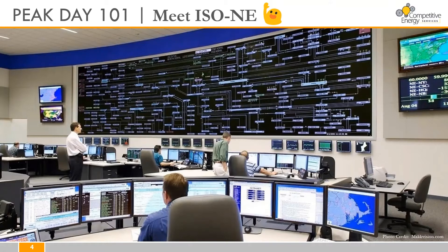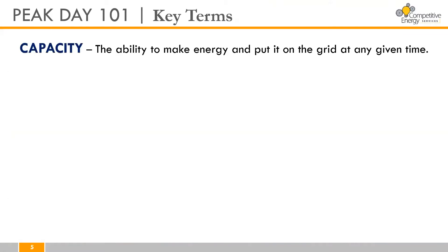Let's talk key terms. Firstly, capacity — simply put, capacity is the ability to make energy and to put it on the grid at any given time. Most days the demand on the grid is entirely manageable. However, there are a handful of days each year when the grid needs to call on more generation, and we call these peak days. The capacity to meet demand on these peak days is crucial for a reliable grid.